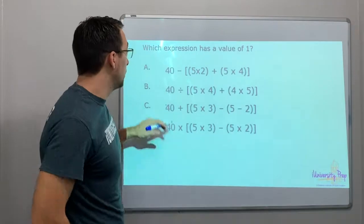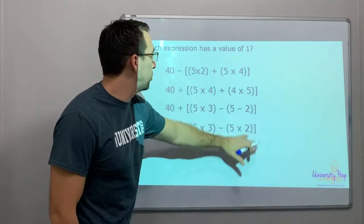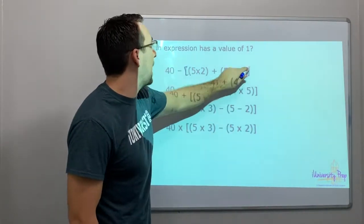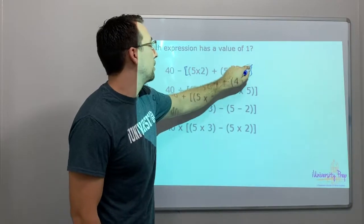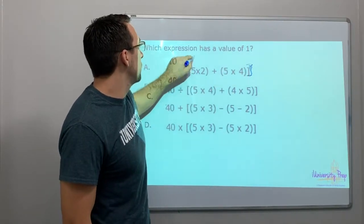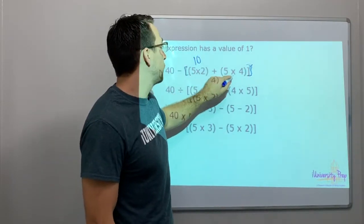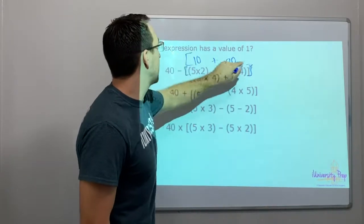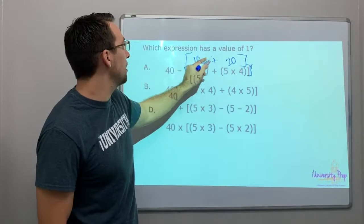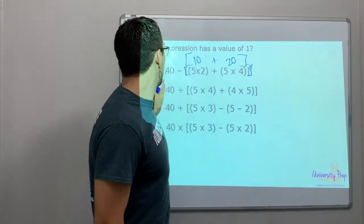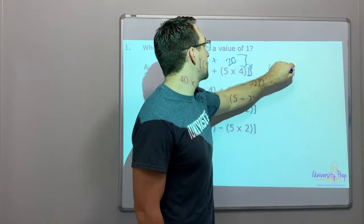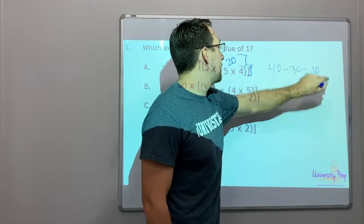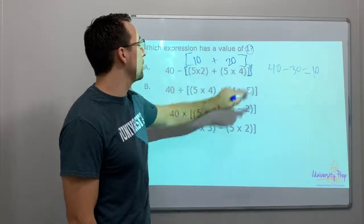Okay, here's... this has brackets and a lot of parentheses here. 5 times 2 is 10, 5 times 4 is 20. So then we have the bracket - we still have the grouping, we have to do that next. 10 plus 20 is 30. What is 40 minus 30? Equals 10. Does that have a value of 1? No.